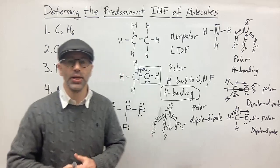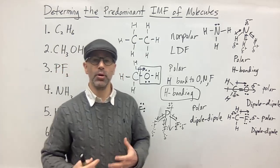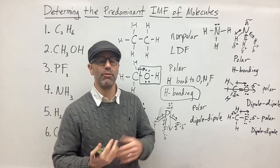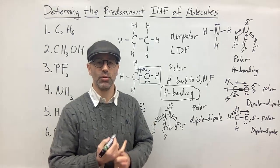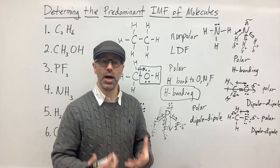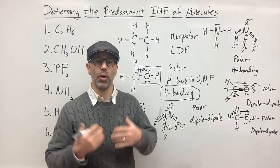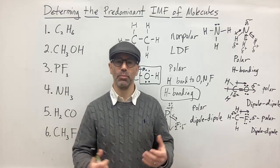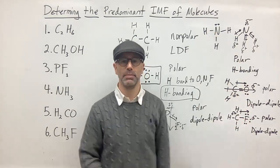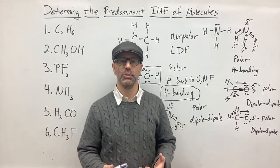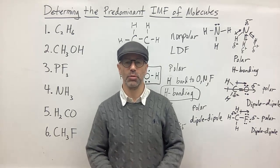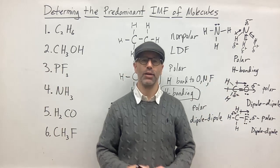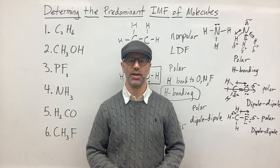That is how you go about figuring out the predominant intermolecular force of molecules. Remember, you can have one, two, or all three forces present, but the predominant one is the strongest. The weakest of the three is London dispersion forces. The strongest is hydrogen bonding, and the one in the middle is dipole-dipole. So whichever is strongest is the predominant one. I hope this was helpful — if you enjoyed this video, please like, share, and subscribe to my channel, hit the notification bell and select 'All,' and leave a comment below. Thanks for joining me and have a great day.